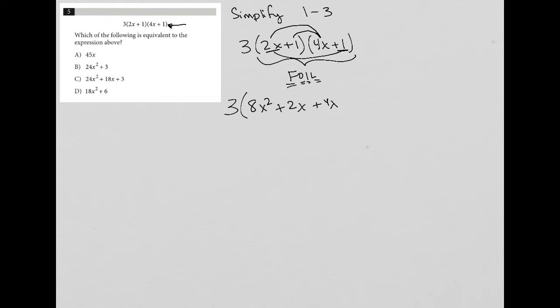And L stands for multiplying the two last terms. So 1 times 1, which is just 1. So then I continue simplifying this and combining like terms. So 8x squared does not have a like term, but 2x plus 4x becomes 6x. And then I have a plus 1 there. I close my parentheses.